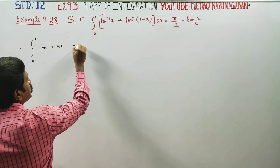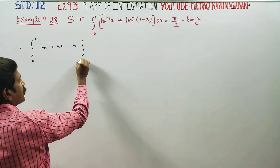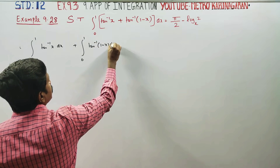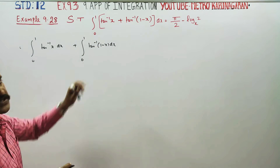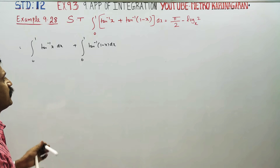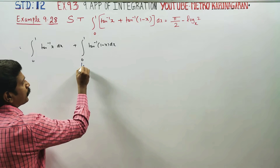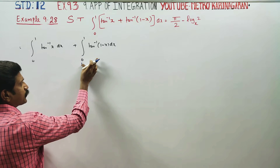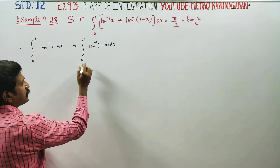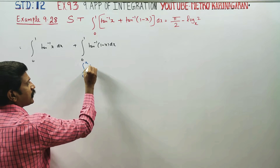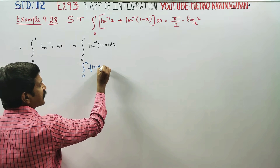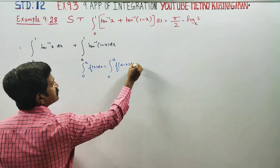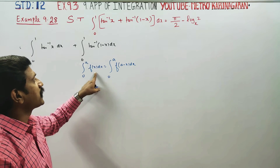This is the sum — we put tan inverse, plus integration again 0 to 1 tan inverse of (1 minus x) dx. We will use a property. What is the property? Integration property: the integral from 0 to a of f(x) dx can also be written as 0 to a of f(a minus x) dx. We can use this property.